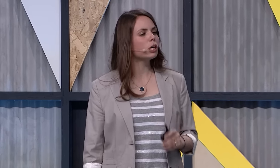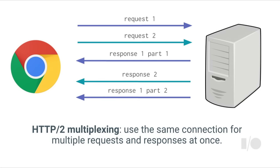In HTTP/1, traditional HTTP, requests and responses are sent in order. In the common case, the browser sends a request, waits for a response, sends another request, waits for the response, and so on. This means if the server takes a while to produce the first response, the client is waiting before it even sends the second request, and the second response is delayed by that much also. In HTTP/2, multiple requests and responses can be multiplexed over the same connection.